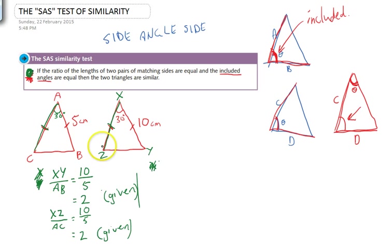So we can see that the ratios of these matching sides, XY to AB and XZ to AC are equal, equal, equal. They're both 2.